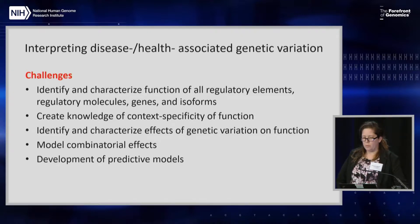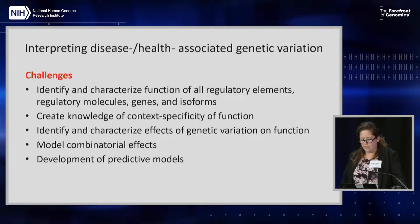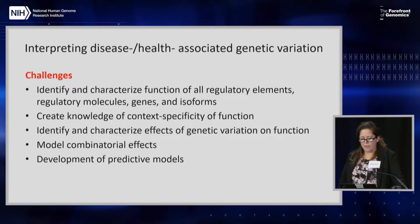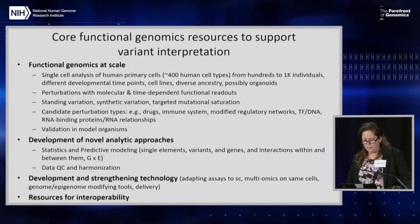Starting with interpreting disease- or health-associated variation, our goals are to identify and characterize the function of all regulatory elements, molecules, genes, and isoforms. One thing that is certainly very important is for us to create knowledge of context specificity of function — that means catalogs, but also enabling us to learn about commonalities and develop predictive models. The big area for these topics is really the core functional genomics resources to support this kind of variant interpretation.